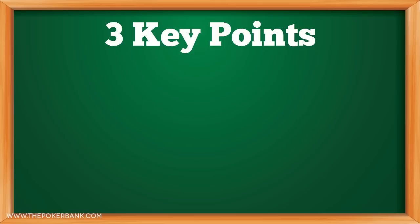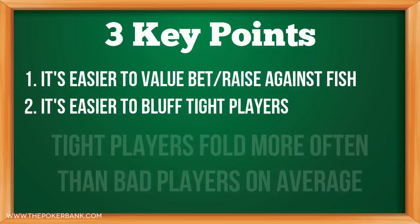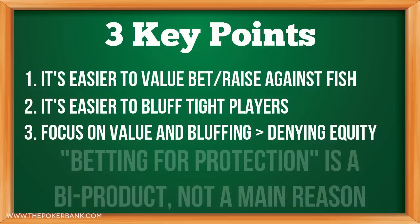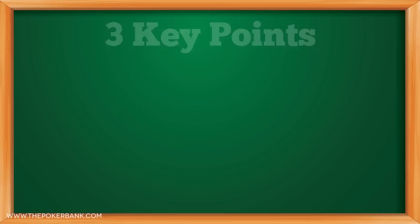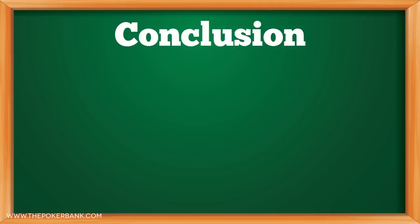And lastly, there are three main notes I want to leave you with. First, it's much easier to value bet or raise against bad players, since they will continue with wider ranges. Second, it's much easier to bluff tight players, since they will only continue with stronger ranges and thus will fold more often. Third, focus on value and bluffs as your main reasons for betting. Denying villain their equity share can be prudent, but it's usually not the main reason for making a bet or raise. Also notice that betting for protection was never listed as a main reason for betting or raising. Whether you are a brand new player or a seasoned poker grinder, you need to understand this fundamental element of poker. Everything we do at the table should be deliberate and thought out, so every bet or raise we make should be done with purpose and a clear understanding of what we are trying to accomplish. Understand this first, and it will make future play more fun and profitable.